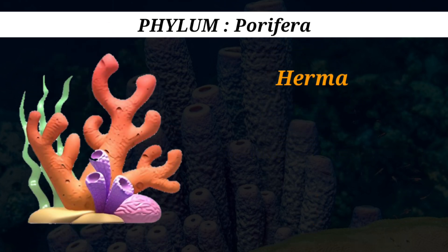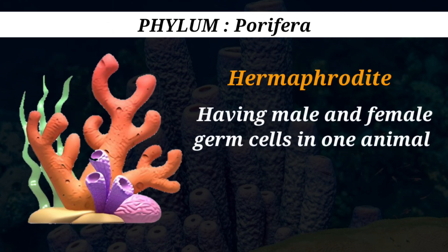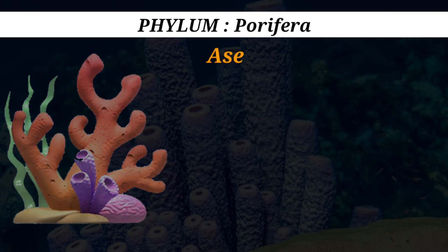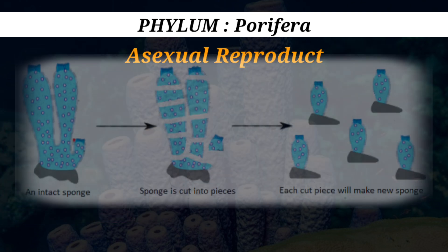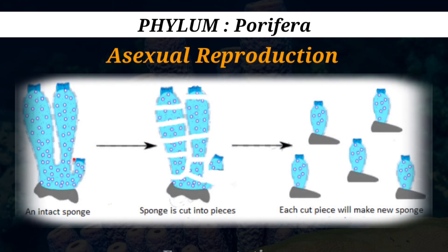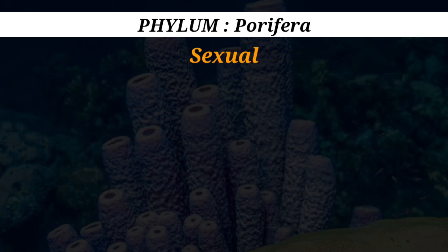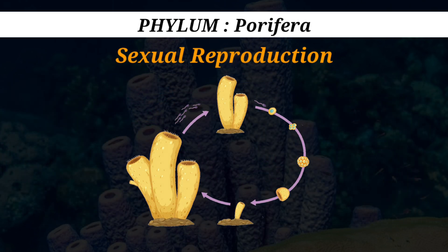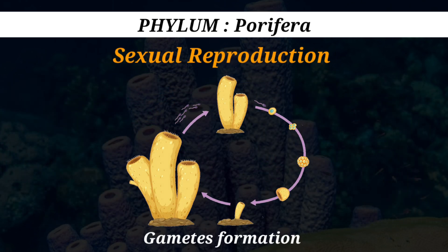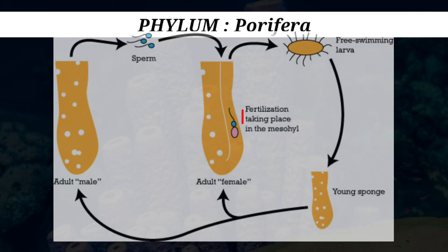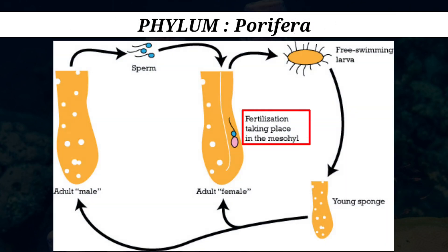Sponges are hermaphrodites and reproduce both asexually through fragmentation, and sexually by generating gametes. In sponges, fertilization occurs internally with indirect development.